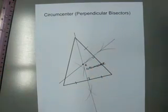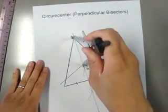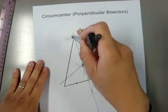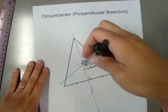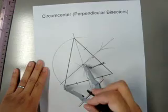The circumcenter is the center of the circle that can be circumscribed around the triangle. So, using that as my center, opening my compass and checking to see if it will meet or intersect all three vertices, I just draw my circle.